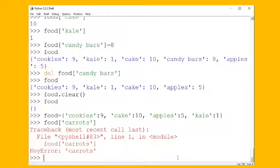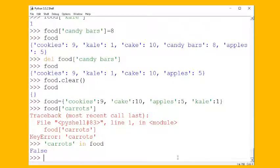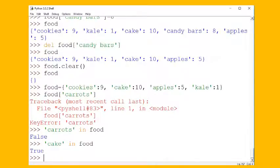Well, we'd like to avoid ugly red error messages in our programs when we're running them, so one thing you might want to do is check, are carrots in the food dictionary before you even run that kind of a command? And we can see that's false, they're not in the food dictionary. But something like cake is in our food dictionary.